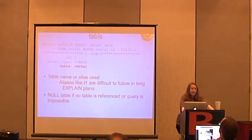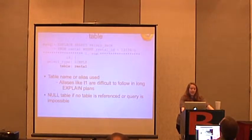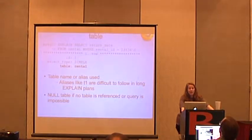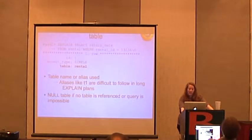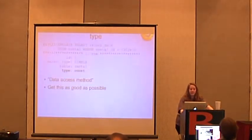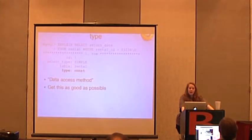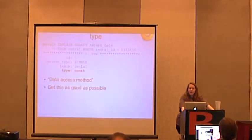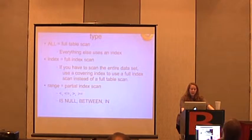The table column shows the table name or alias used. A lot of people in their code will alias things like T1 and T2, and that gets really tough in an EXPLAIN plan — you're like, I've got seven things here, what's PQRS again? You'll have a NULL table if you don't actually have a table reference. The TYPE column is the data access method. This is what you want to get as good as possible, and this is where you look at a reference sheet.